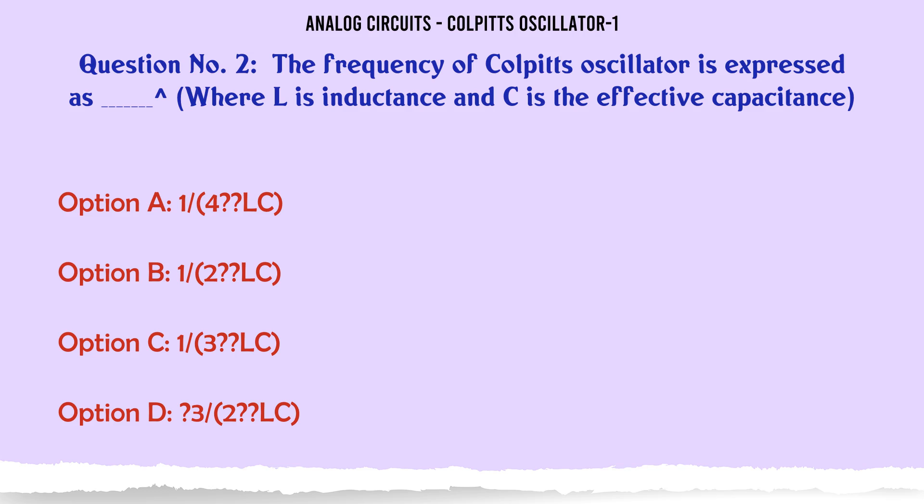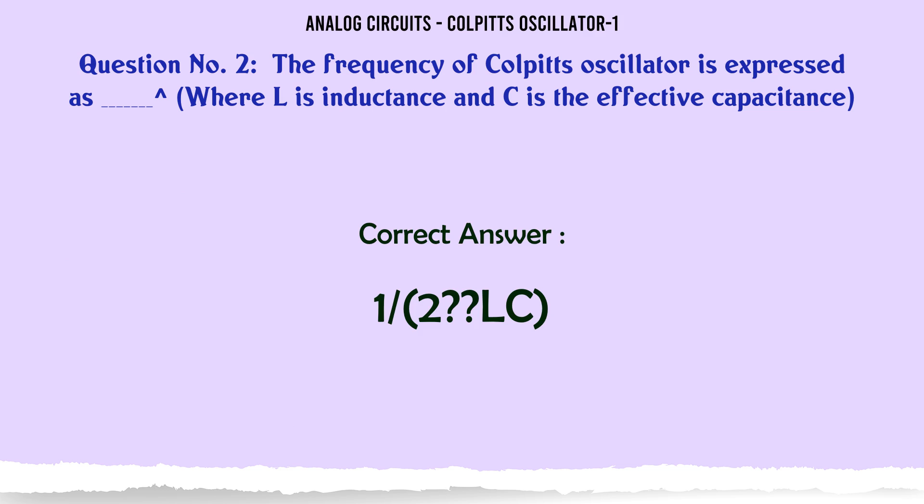The frequency of Colpitt's oscillator is expressed as where L is inductance and C is the effective capacitance: A) 1/(4LC), B) 1/(2π√LC), C) 1/(3LC), D) 3/(2LC). The correct answer is 1/(2π√LC).